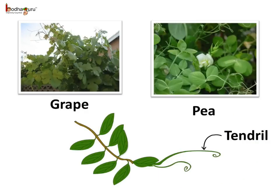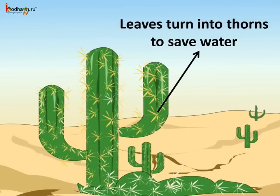In certain plants like the pea, grapes, etc., the leaf turns into thread-like tendrils. The plants coil the tendril, which is the modified leaf, around a support to climb on it. The cactus plant grows in the desert. The leaves of the cactus plant are reduced to spines so that the plant doesn't lose water during transpiration. The spines also protect the plant from grazing animals. It's the green fleshy stem which makes the food in the case of the cactus plant.